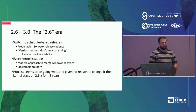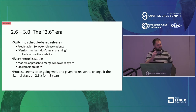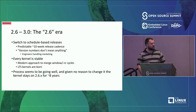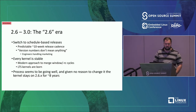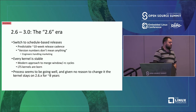Every release is a merge window that takes two weeks, followed by a stabilization period of weekly release candidates for about another seven or eight weeks. At the end, the kernel release is stable and good enough for customers to run. For customers who want more stability, this is where the concept of LTS trees was born, where LTS versioning was the fourth number at the end.